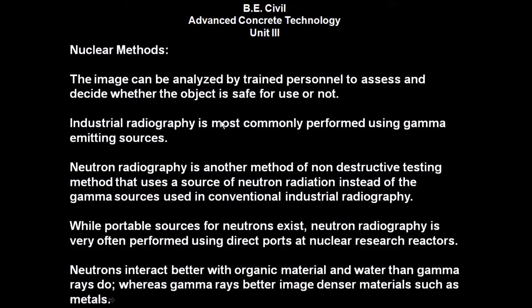Industrial radiography is most commonly performed using gamma-emitting sources. Neutron radiography is another method of non-destructive testing that uses a source of neutron radiation instead of the gamma sources used in conventional industrial radiography. While portable sources for neutrons exist, neutron radiography is very often performed using direct ports at nuclear research reactors. Neutrons interact better with organic materials and water than gamma rays do, whereas gamma rays better image denser materials such as metals.